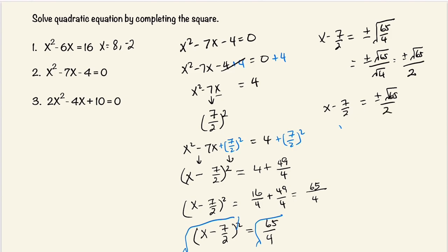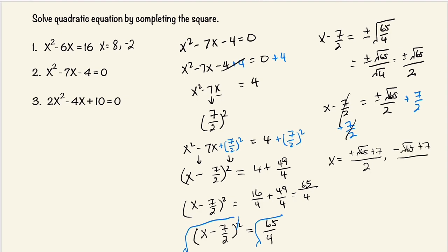Now we want to add 7 halves on both sides. This will cancel. And now we have x is equal to plus or minus the square root of 65 plus 7, all over 2. And these are our answers.